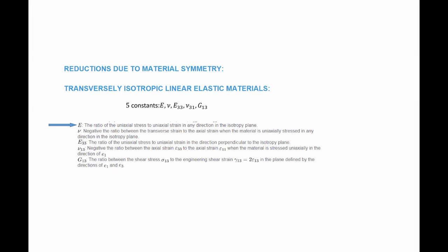The five constants are defined as follows. E is the ratio of uniaxial stress to uniaxial strain in any direction in the plane of isotropy. Poisson's ratio nu is the negative ratio of transverse strain to axial strain under uniaxial stress in any direction in the isotropy plane. E_33 is the ratio of uniaxial stress to uniaxial strain perpendicular to the isotropy plane. Poisson's ratio nu_13 is the negative ratio of epsilon_33 to epsilon_11 under uniaxial stress in the e_1 direction. G_13 is the ratio of shear stress sigma_13 to engineering shear strain gamma_13 in the plane of e_1 and e_3.